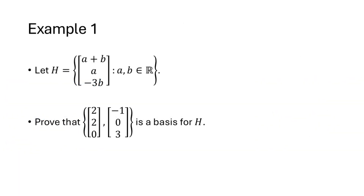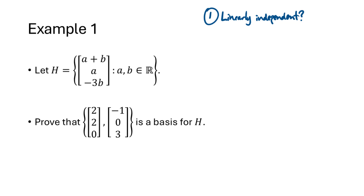Let's look at a different example. Here we have a subspace H defined by set builder notation, and we want to prove that the set containing the vectors (2, 2, 0) and (-1, 0, 3) forms a basis for H. We go back to the definition: we have to show that this set is linearly independent, and we have to show that these two vectors span H.